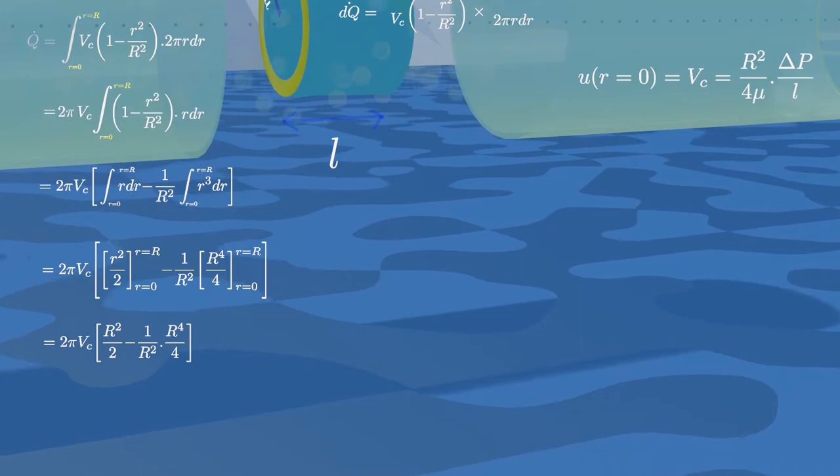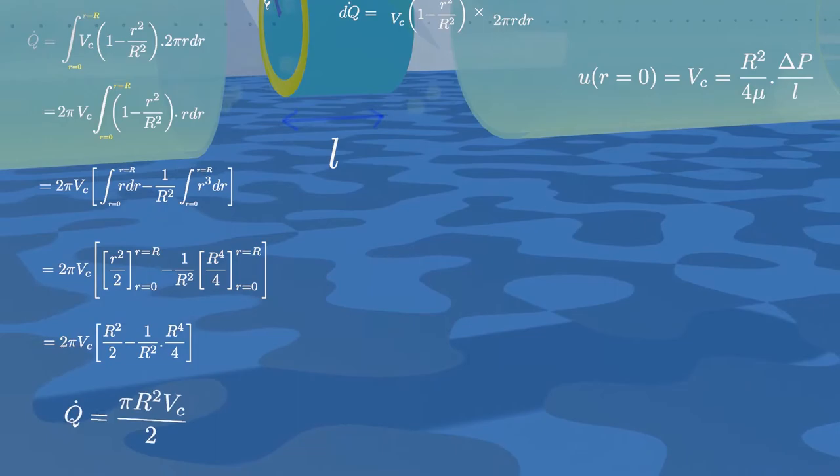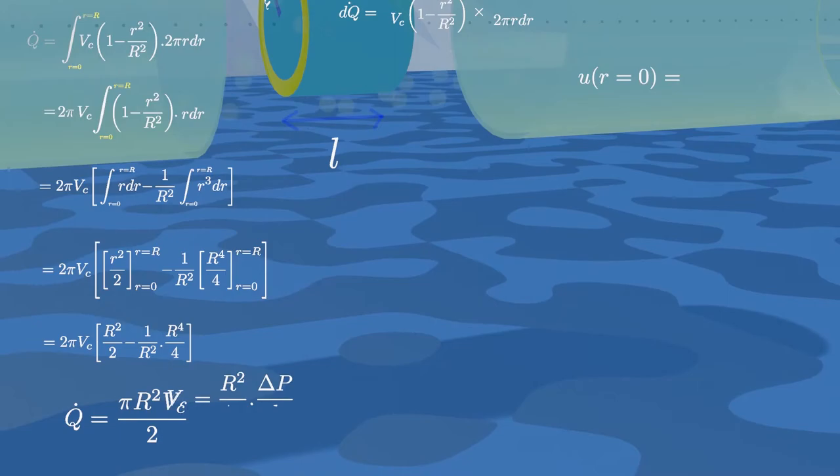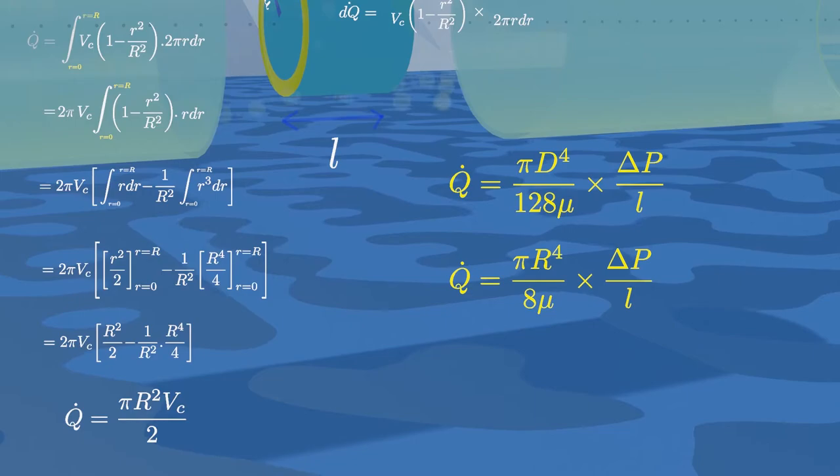Now, let us solve this integration. After solving, we get the flow rate as this expression. Now, substitute our center line velocity, we get the volume flow rate through this pipe.